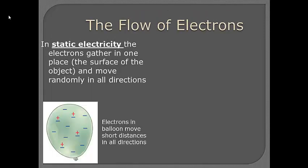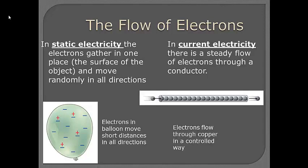Now, in static electricity, recall in grade 9 that it was when electrons gathered in one place, like on the surface of a balloon, and it was often on the surface and the charges could move in all different directions. The type of current electricity that we will be doing this year is current, and it will be the flow of electrons in a controlled way. It's not like static electricity where the charges are moving all randomly.